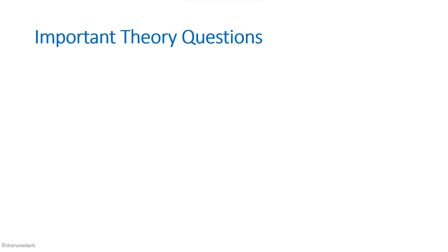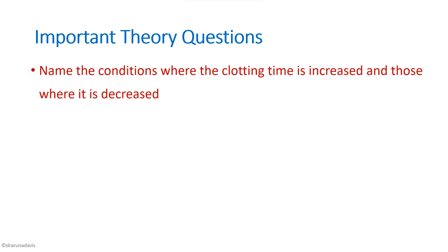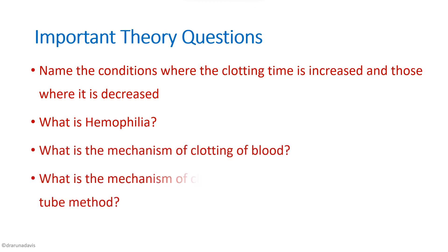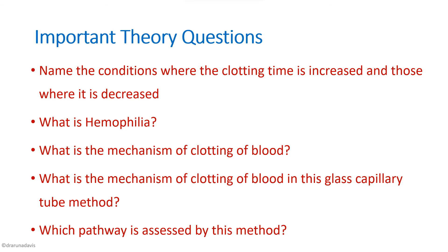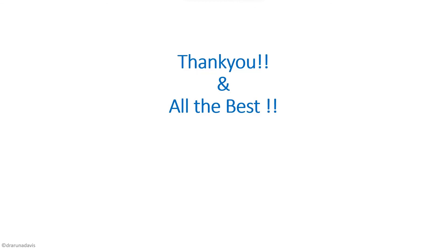Other important theory questions from this section include: what are the conditions in which clotting time is increased or decreased — remember, deficiency of clotting factors increases clotting time. What is hemophilia — a deficiency of a clotting factor. What is the mechanism of clotting of blood, and what is the mechanism of clotting in the glass capillary tube method? In the intrinsic system, the pathway is activated when blood contacts glass, so the capillary tube method is actually assessing the intrinsic pathway. These are the important theory questions to prepare.